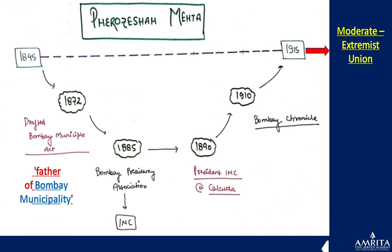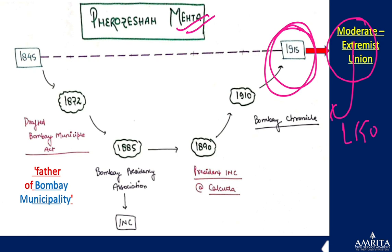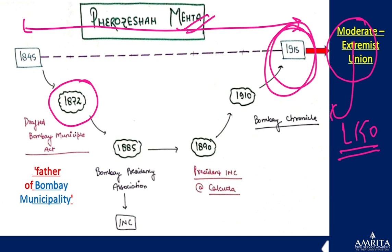Ferozeshah Mehta was a fierce moderate — he kept the moderate flag flying until his death. Many of Annie Besant's efforts to include extremists into the Congress were foiled by Ferozeshah Mehta. After he died in 1915, the Lucknow Pact and the extremist-moderate union could finally be achieved. This is why knowing the approximate death date of an individual matters — had he been alive, the extremist-moderate union would have been further delayed.